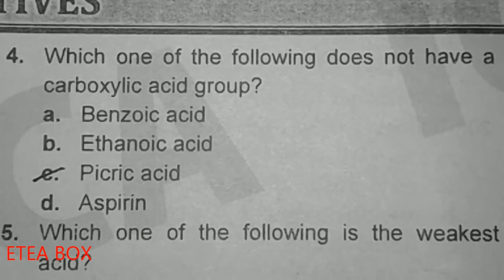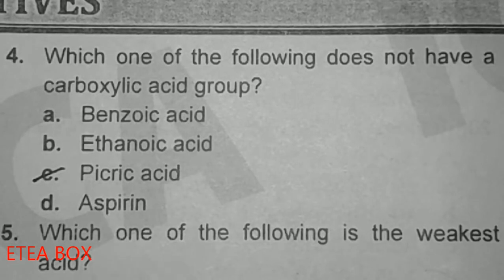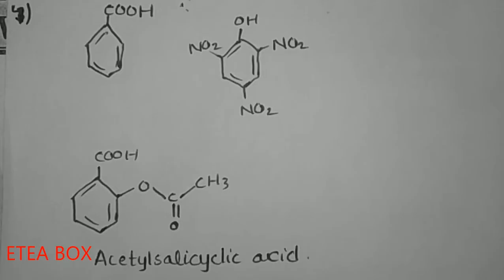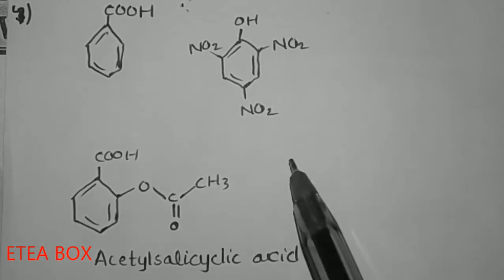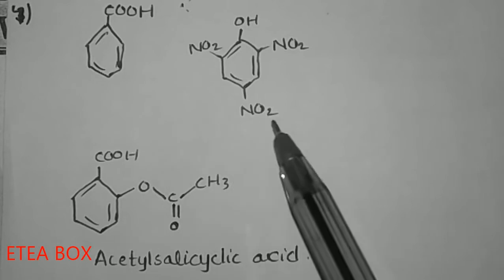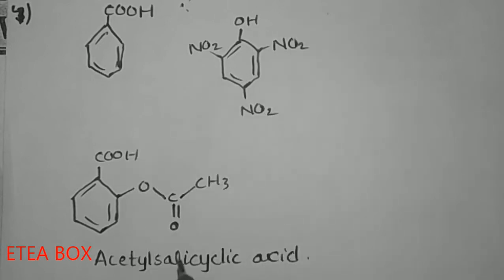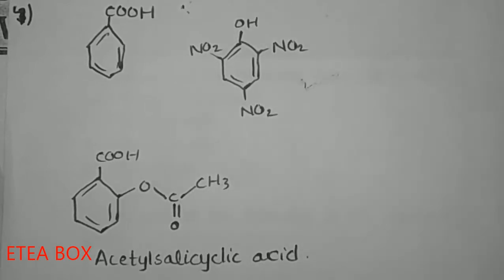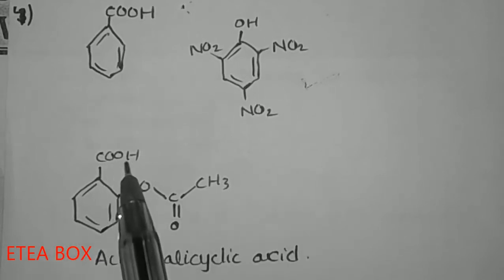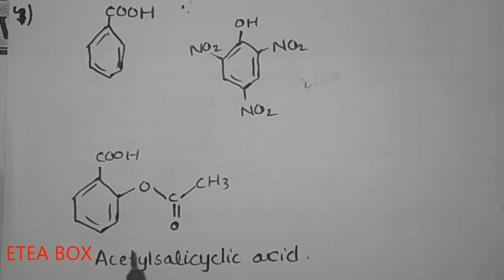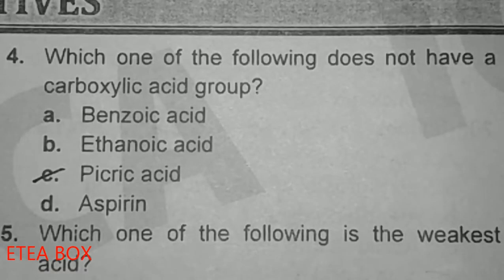Which of the following doesn't have a carboxylic acid group? Option C, picric acid, does not have a carboxylic acid group. Benzoic acid contains a carboxylic acid group. Picric acid does not. Aspirin also contains a carboxylic acid group — aspirin is also called acetylsalicylic acid. So picric acid is the correct answer.